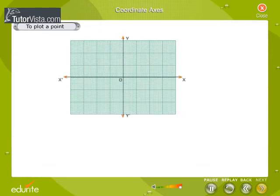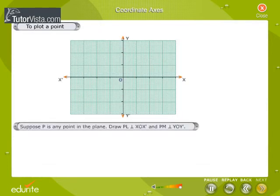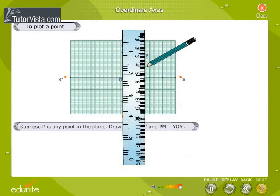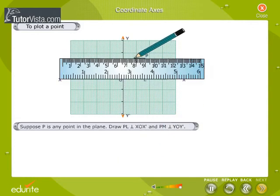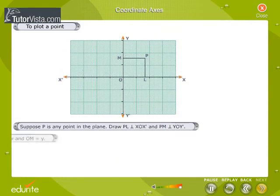Let us now see how to plot a point. Suppose P is any point in the plane. Draw PL perpendicular to XOX' and PM perpendicular to YOY'. Let OL = x and OM = y.